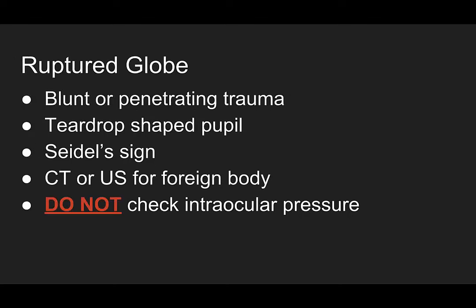So let's talk about ruptured globe and ocular injury. This can be from either blunt or penetrating trauma. It will classically present with a tear drop shaped pupil. And you want to look for Seidel's sign on exam. Seidel's sign is when you stain the eye with fluorescein and you have aqueous fluid that's flowing or streaming out of that anterior chamber across the anterior surface of the cornea.